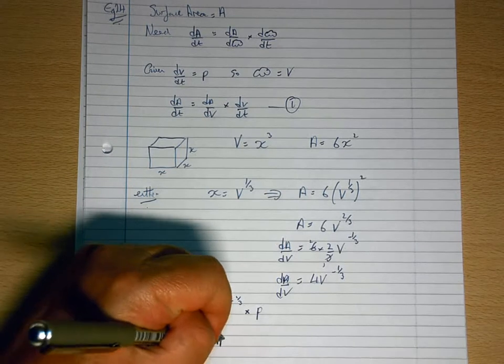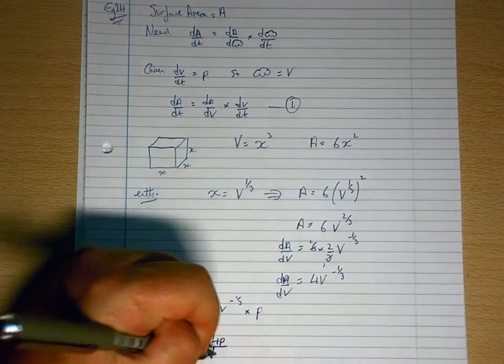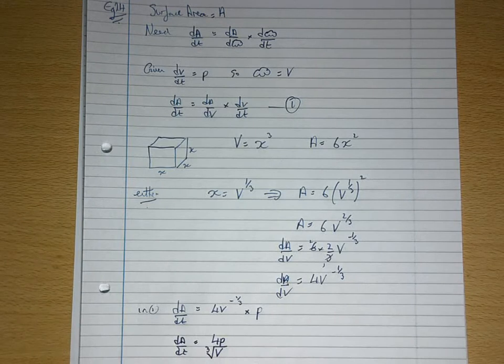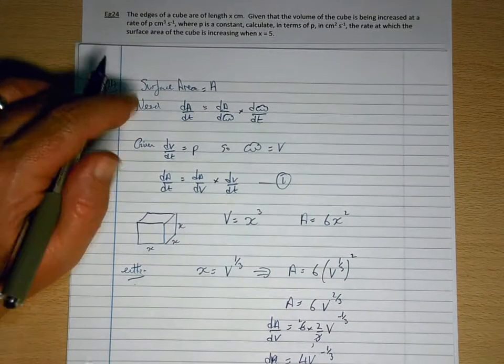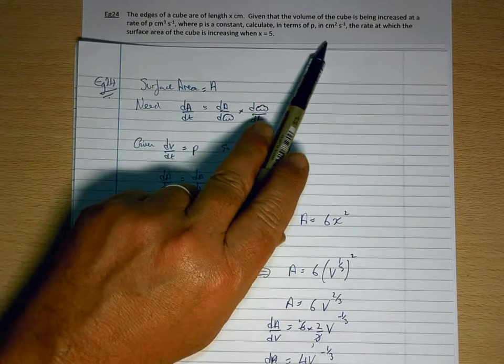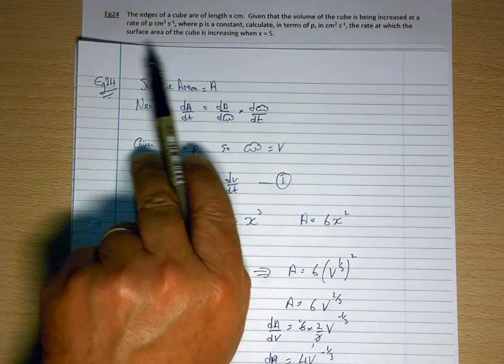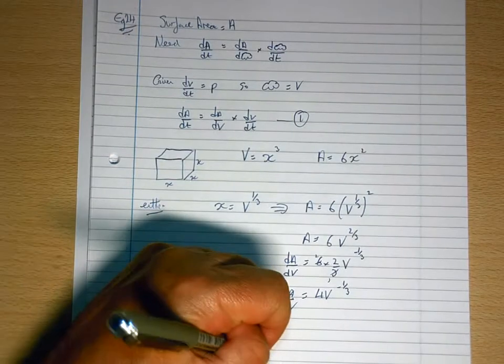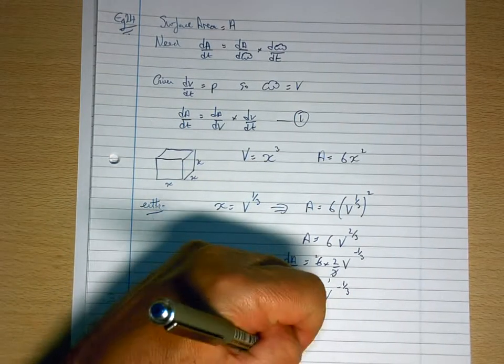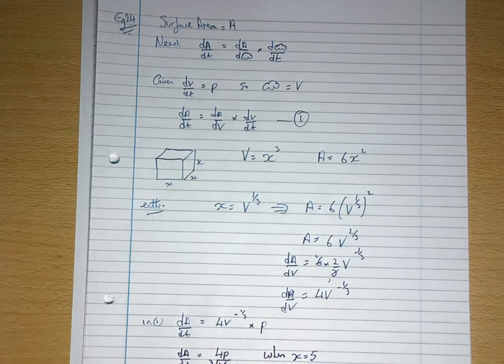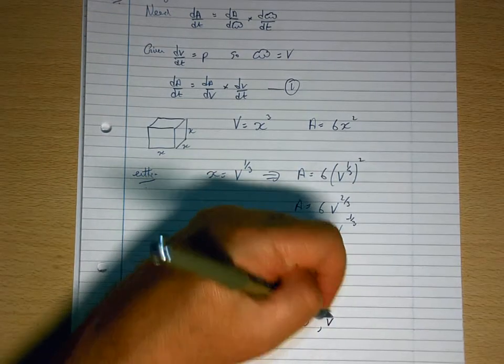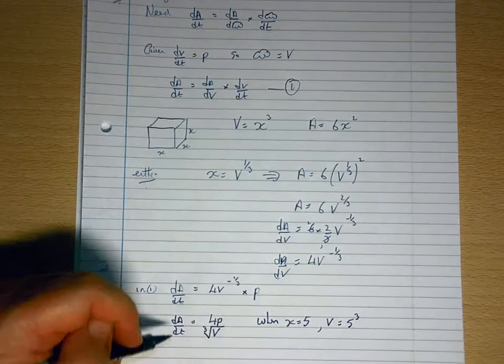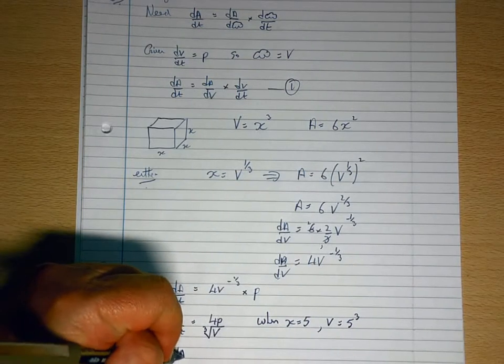So dA/dt would be 4p over the cube root of V. Now I'll go back to the question. Calculate in terms of p the rate at which the surface area of the cube is increasing when x equals 5. So when x equals 5, the volume would be 5 cubed, and the rate dA/dt